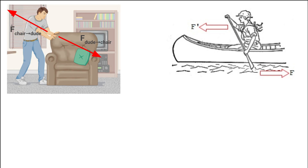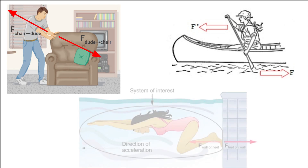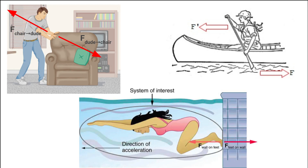If you push on a table you can feel the table pushing back on you - that upward pressure on your palm is the table's force on you, equal to your force on the table. That's how paddling works: you push water backward with an oar, so the water pushes your oar forward. Same with pushing off a pool wall - you push backward on the wall so the wall pushes forward on you. Force of feet on wall, force of wall on feet - always A on B, B on A.